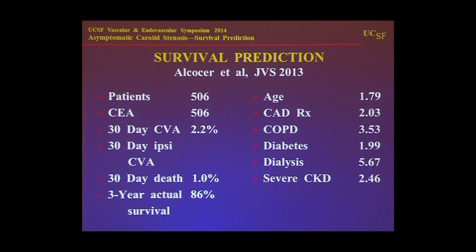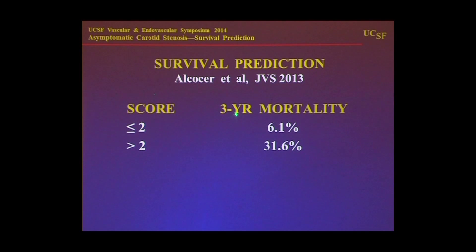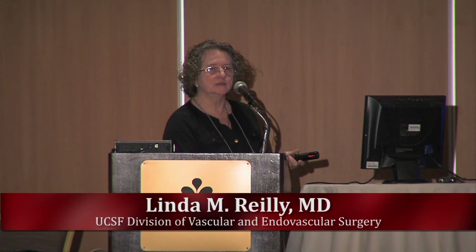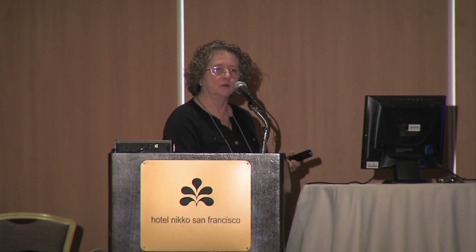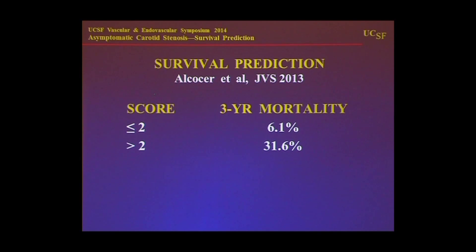A final study attempting the same thing looked at about 500 patients, with a good overall stroke and mortality rate. They identified roughly the same factors, with slightly different weights, and used a binary approach to predicting mortality looking at only three-year mortality. If the score was less than or equal to two, three-year mortality was quite low; if greater than two, mortality was in the 30% range. It seems consistent across groups to identify factors correlating with risk of death during follow-up, but the specificity of identifying which individual patient should not undergo the procedure remains somewhat imprecise.